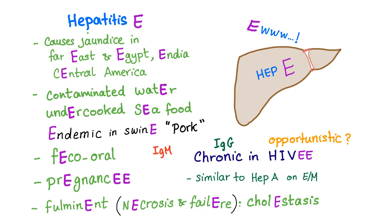However, it also can be chronic, such as in patients with HIV or patients with immunosuppression. Some textbooks, including Harrison's — which is my favorite book, I will link it in the description — regard Hepatitis E as an opportunistic infection for people with HIV.